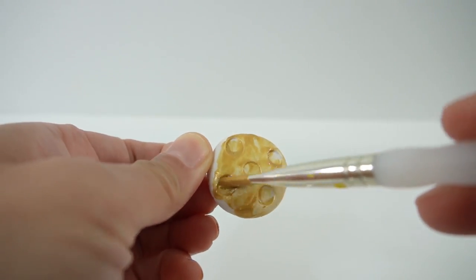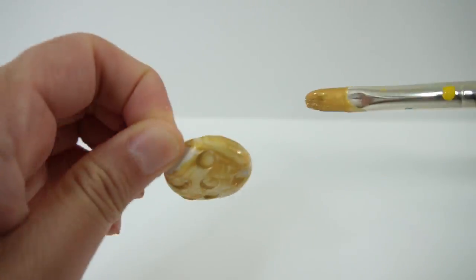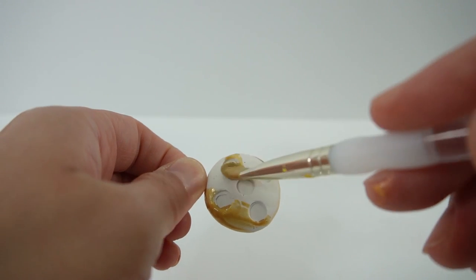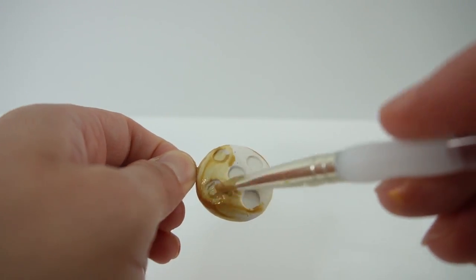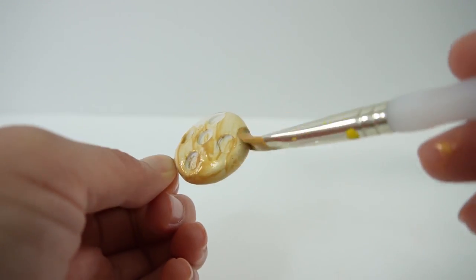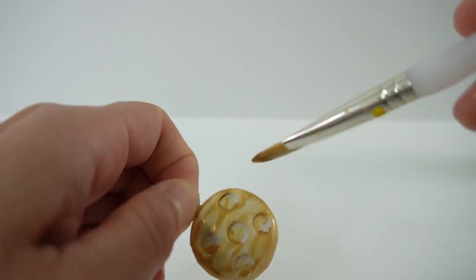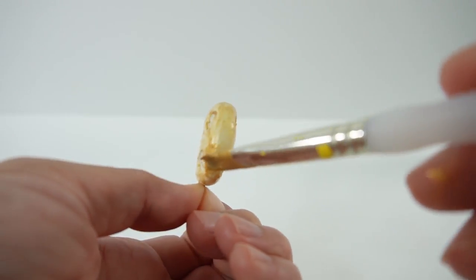A magical charm is a small object that Ladybug gives to a defeated villain. This way, the person holding it will not be akumatized by Hawk Moth anymore. And what I love about the charms is that every one of them is unique. So if you were to receive a magical charm from Ladybug, what would it look like? Let me know down below in the comment section.